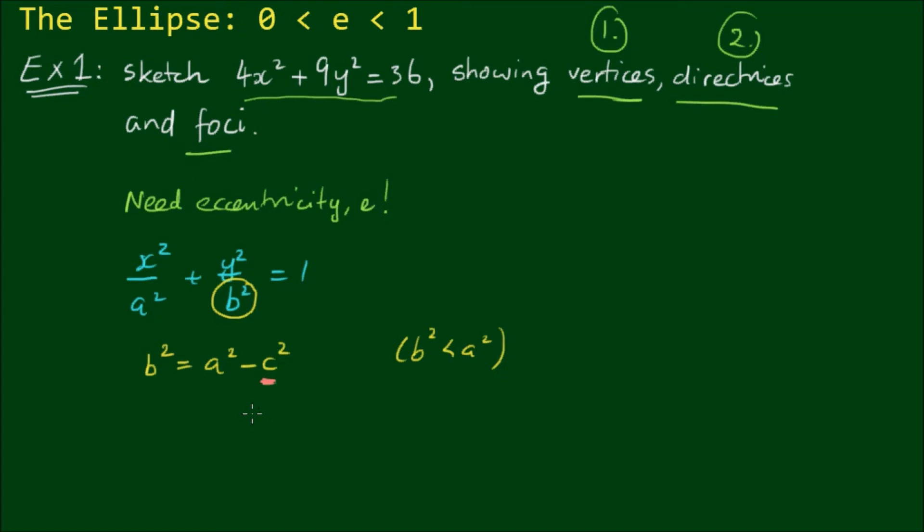And in an earlier video, we found that the distance c is equal to the eccentricity times the semi-major axis. So here we have a² minus (ea)², and from this, I can factor out an a². So I can write this as a² times (1 minus e²).